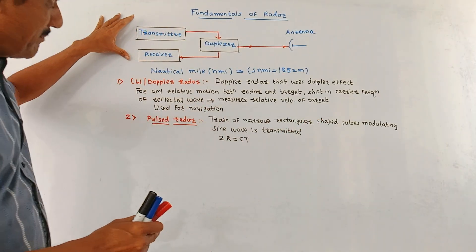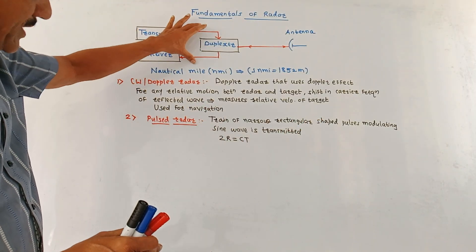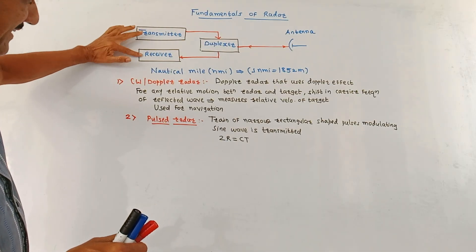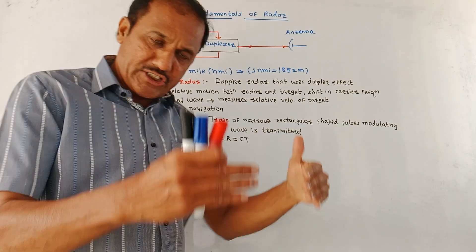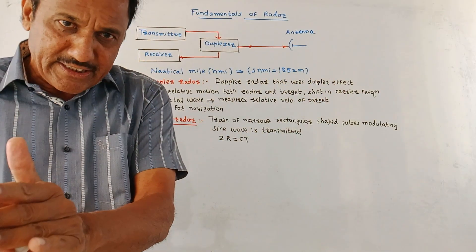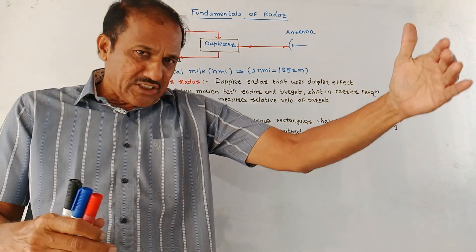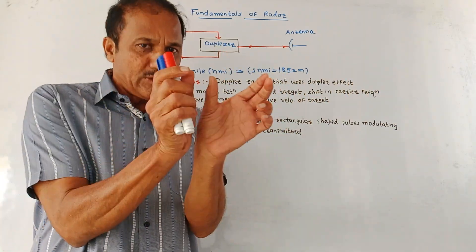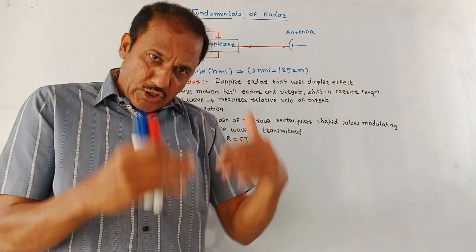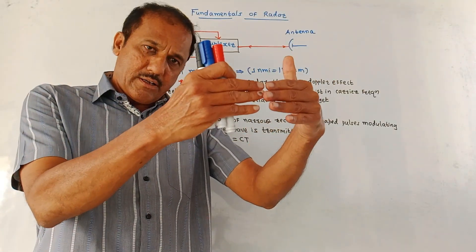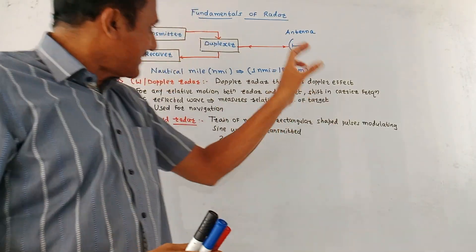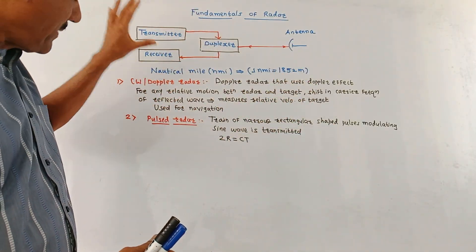This diagram gives the basic operation of a radar system. It consists of a transmitter and receiver section. As the name indicates, the transmitter transmits the signal. These signals reach the target, which causes reflection of those signals. Those reflected signals are called echoes. The echoes are first captured, then demodulated and amplified, and applied to the receiver section of the radar.